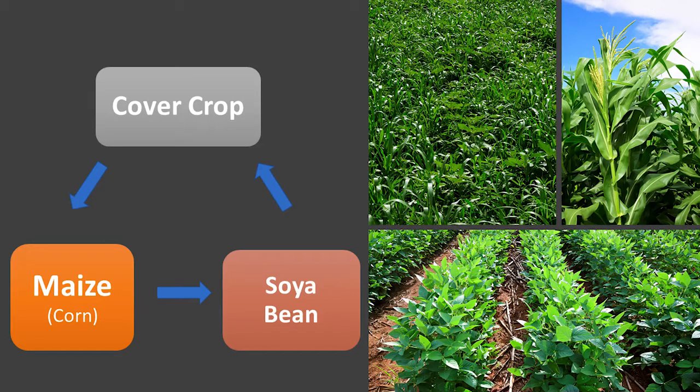I have a three-year crop rotation. I start off with cover crops, then I go over to maize or corn, then soybeans, and then back to cover crops again.